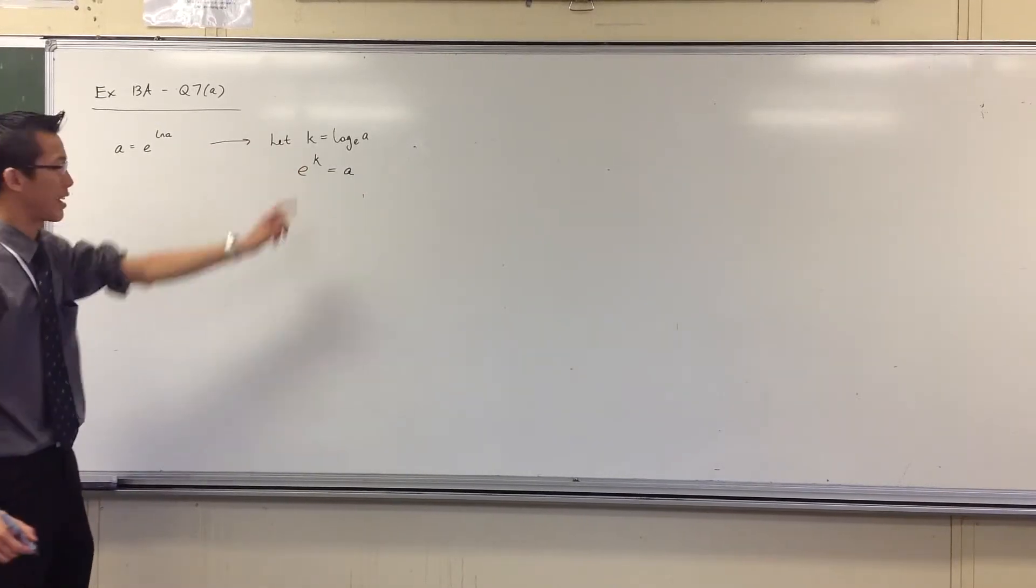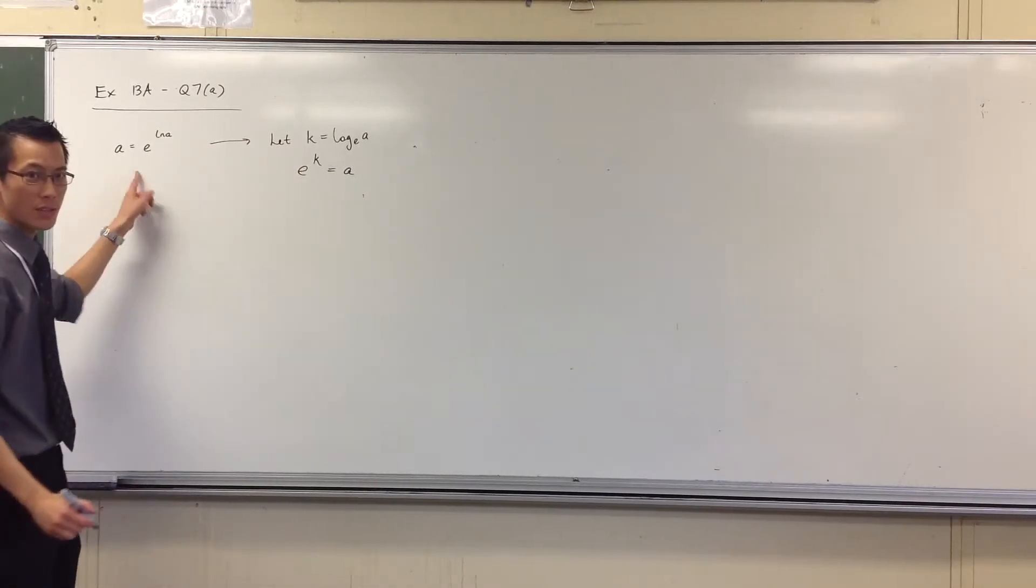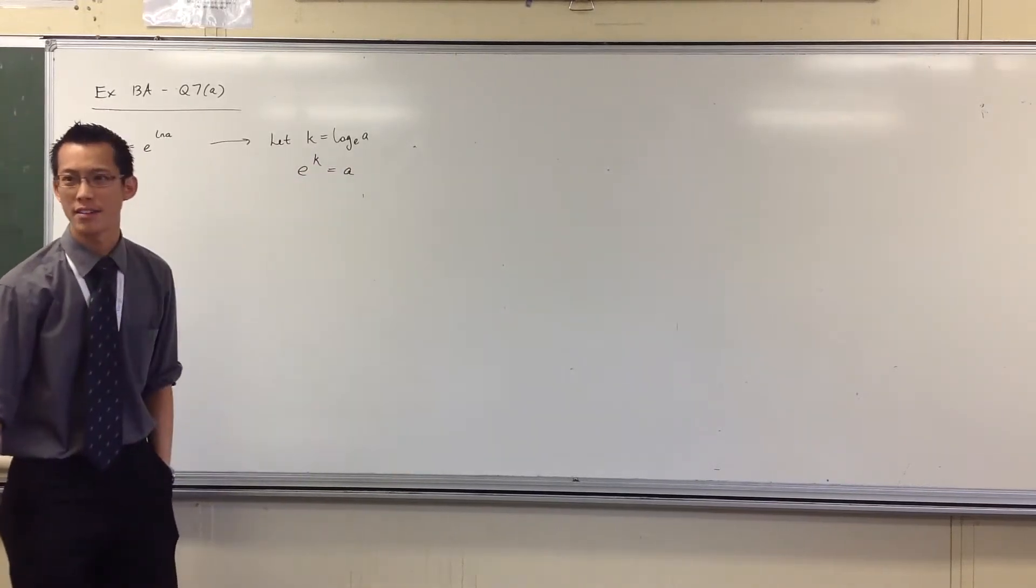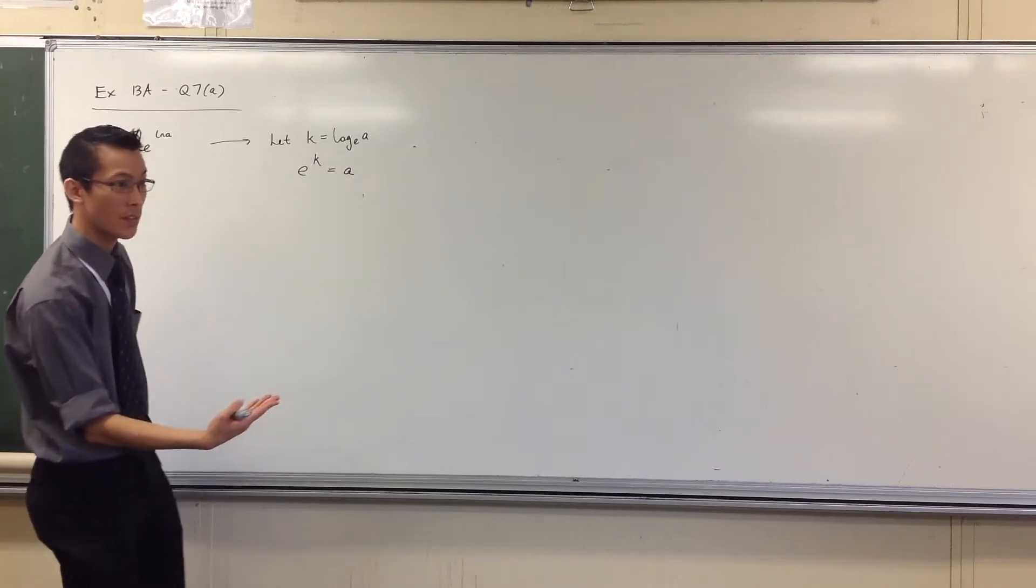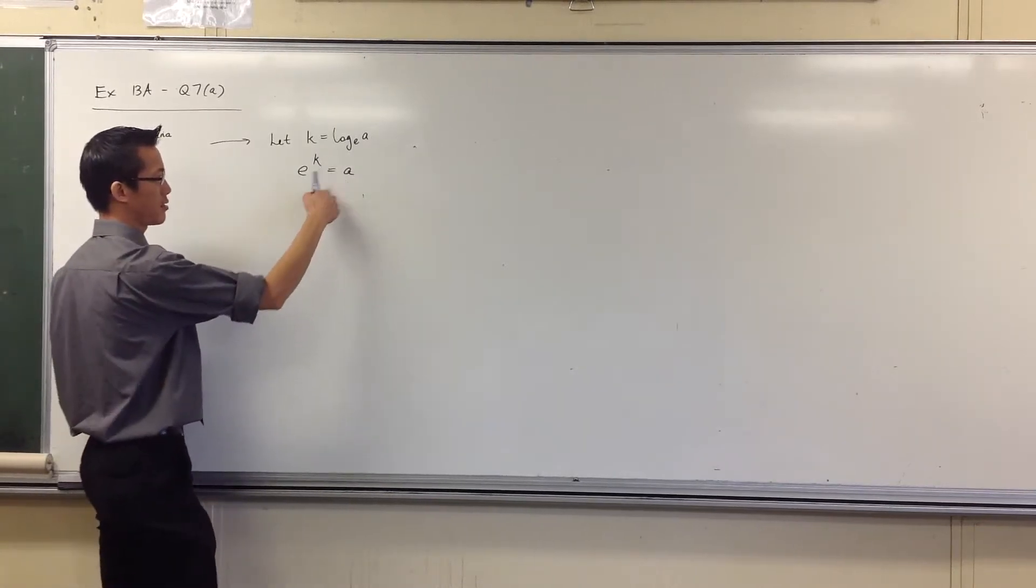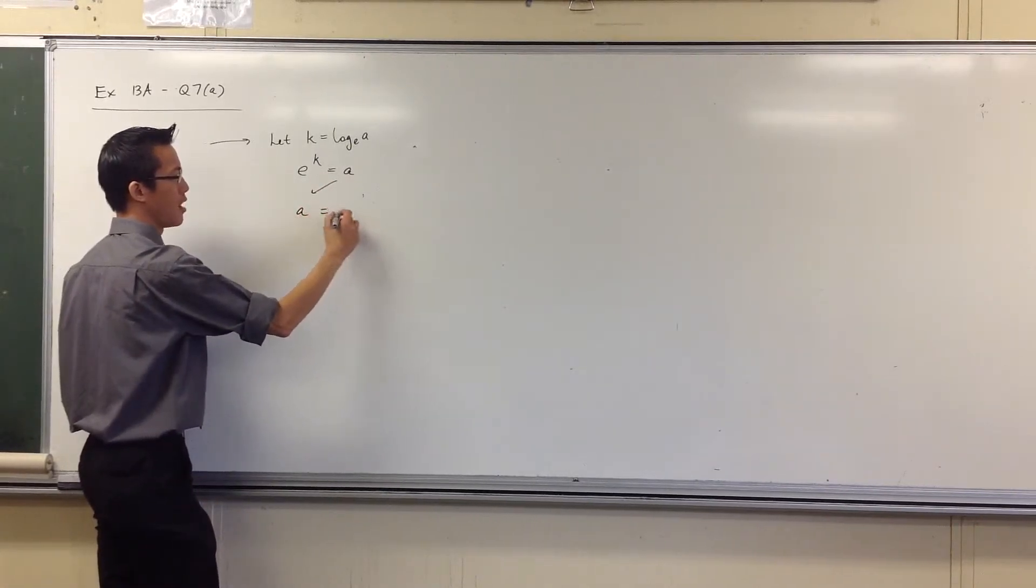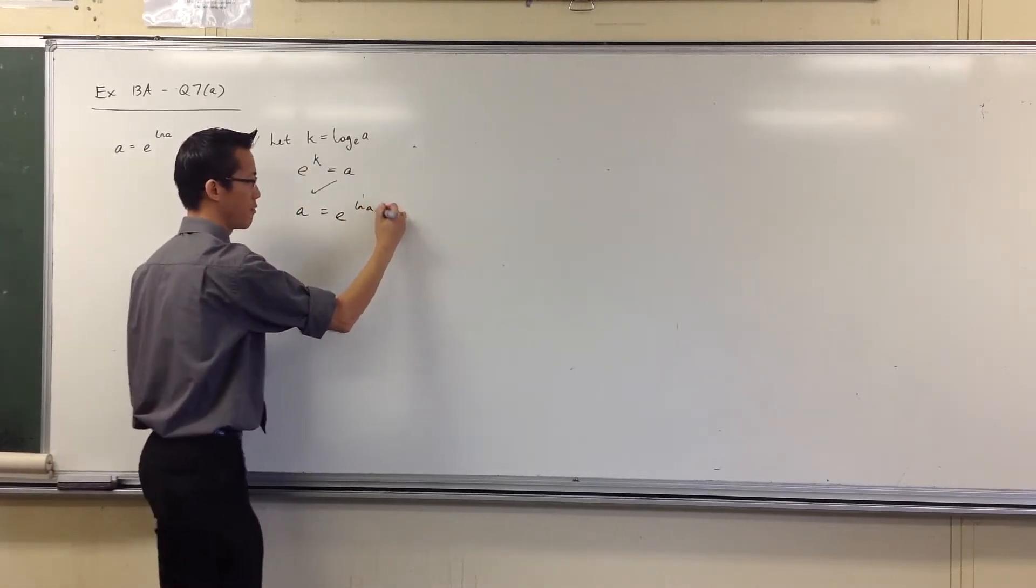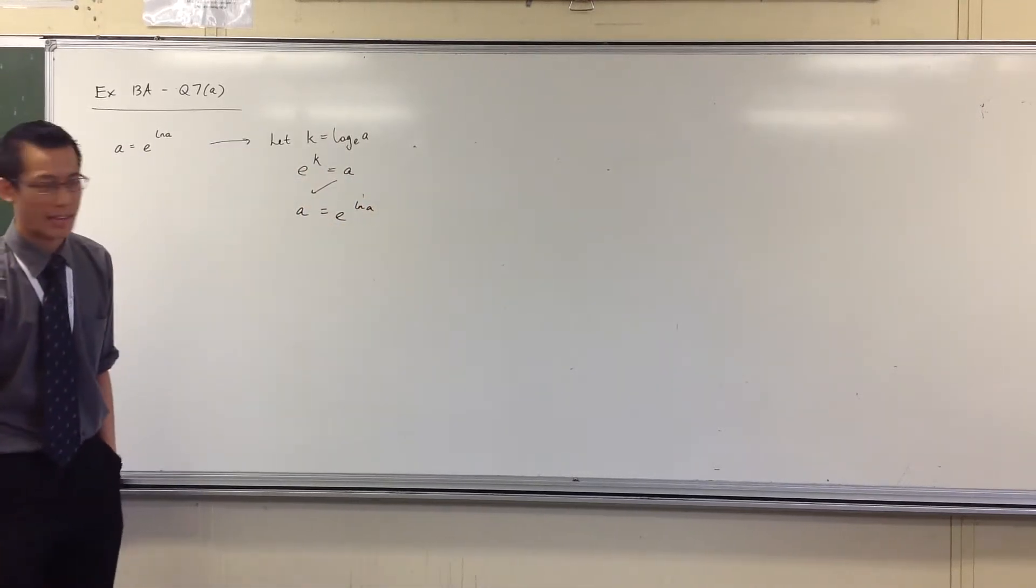All right, but hold on a second. We're really close to here, right? Can you see, I know what K is. I've just defined it. So if I wanted to, if it was convenient for me, I can just, let's bring this over here. I can write E to the power of, instead of K, I'll just say natural log of A. That's it. That's all there is to it.